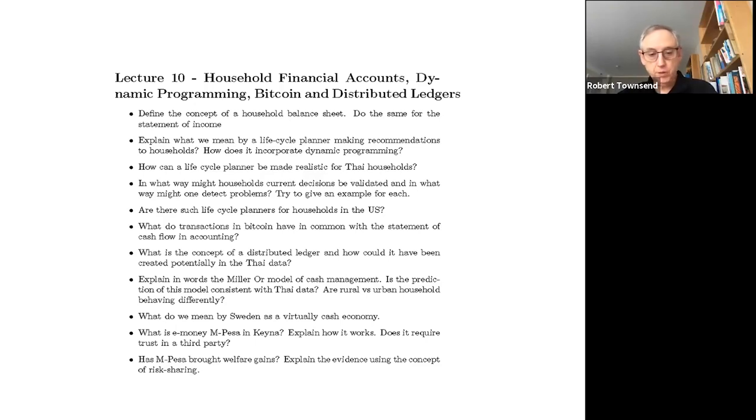Namely, you have a peak where you're accumulating assets early on as a young saver with consumption less than income. And then you start spending down those assets when your income sources diminish, especially if you retire. And then we applied it to Thailand.